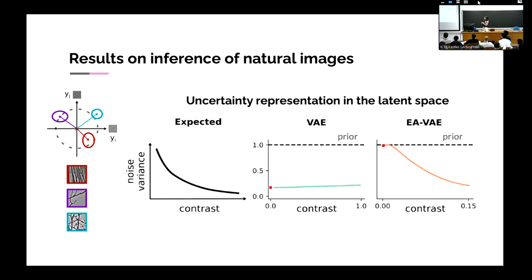Some results on the inference of natural images: we would expect the noise variance of the posteriors — the uncertainty measure — to decrease as contrast gets higher. What we found is that on classical variational autoencoders, this remained almost constant (the green curve). Even when contrast is actually zero — a blank image — the posterior had very low variance, mismatching the prior level. For the Explaining Away VAE, the incorporation of this new multiplicative variable resolved this problem by now having decreasing uncertainty with contrast.